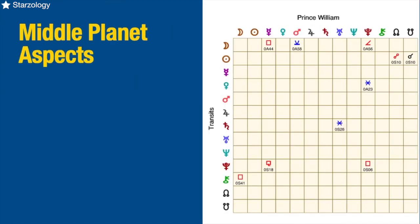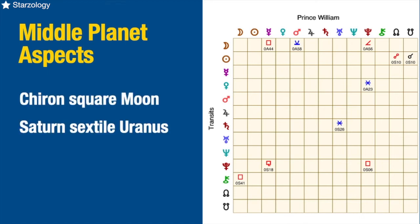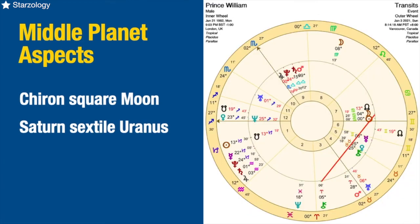Let's look at the middle planet aspects — your middle planets are Mars, Jupiter, Saturn and Chiron. What we've got is Chiron is squaring the moon and Saturn is sextile Uranus. Middle planet Chiron is making a square to his moon — we would pay attention to that for sure — and Saturn is sextile Uranus, which you'd want to look into as well. On the chart you can see Chiron square to his moon, and there is the Saturn sextile in blue to Uranus, showing which way the energy is going from the transiting planet into the natal chart.